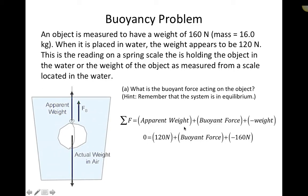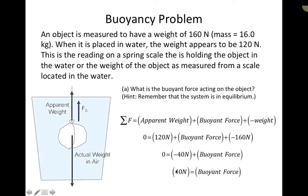Since the system is in equilibrium, the sum of these forces equals zero. The apparent weight is 120 newtons upward, plus the buoyant force, minus the actual weight of 160 newtons. Adding 120 and negative 160 gives negative 40 newtons, so the buoyant force must equal 40 newtons. The buoyant force is simply the difference between the actual weight and the apparent weight, because these two upward forces must equal the downward force.